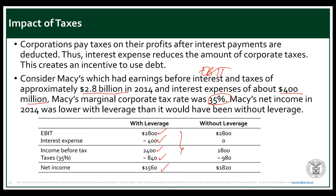If we hypothetically compute an equivalent income statement for Macy's without leverage, the EBIT will be the same but there is no interest. Therefore, income before tax equals EBIT. At 35%, net income without leverage is $1.820 billion.